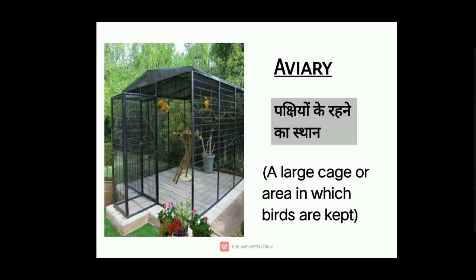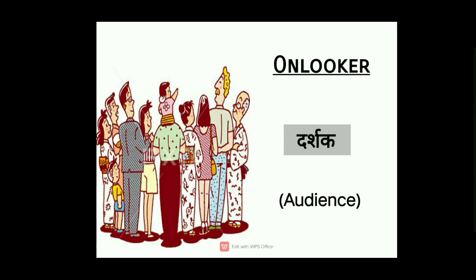Next word is ivory. Ivory means a large cage or area in which birds are kept — like an aquarium. We call this area ivory.